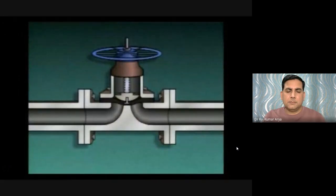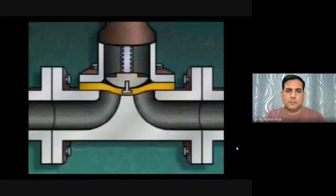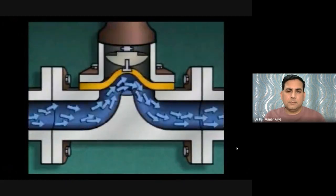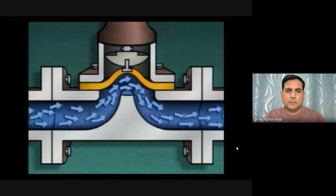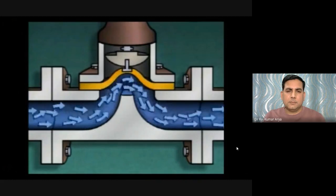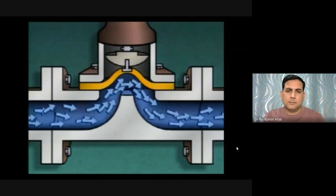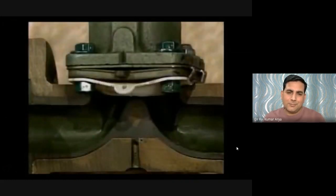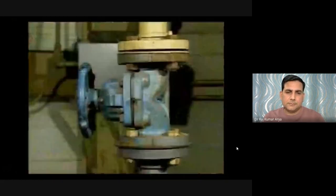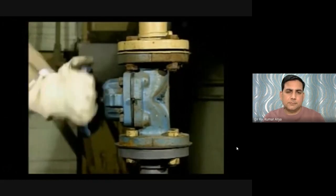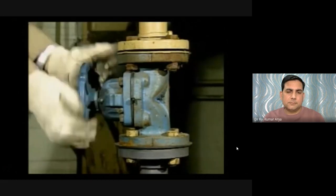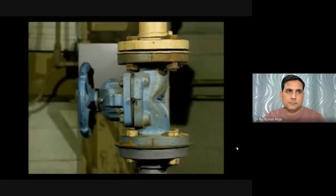The diaphragm also serves as a seal that keeps fluid from contacting the operating parts of the valve. This makes diaphragm valves well suited for systems carrying corrosive materials such as acids and caustics. Some diaphragm valves contain a plastic liner to protect the valve body. When operating a diaphragm valve, be careful not to use excessive force when closing it, as this can cause the plunger to jam the diaphragm against the seating area and cut the diaphragm, causing leakage.